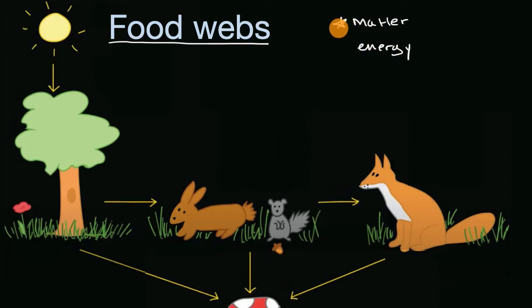Now when I talk about matter, I'm talking about the atoms in an ecosystem, the molecules. When you look at your hand, it is made up of atoms. And it turns out that the matter is not created or destroyed, it's just recycled throughout an ecosystem.